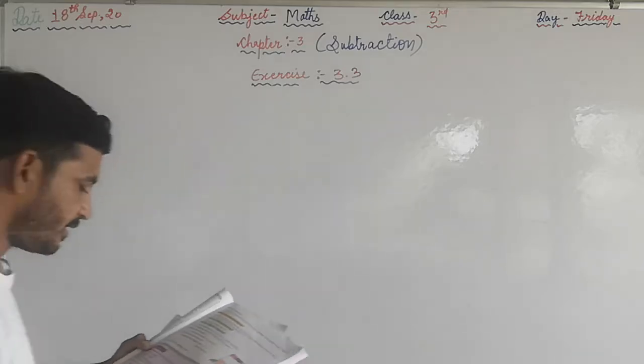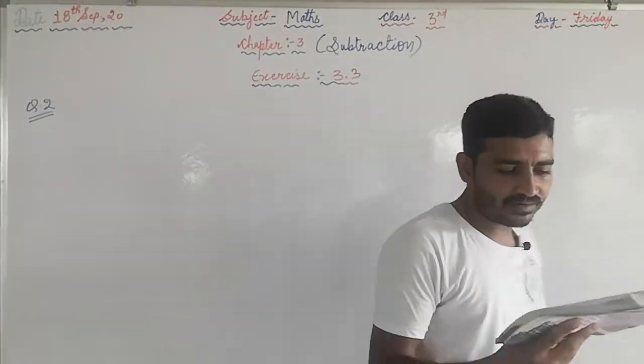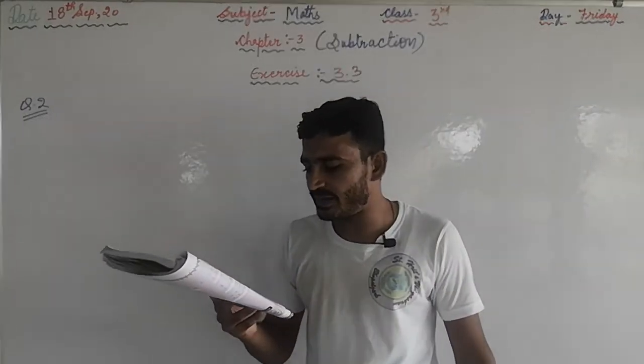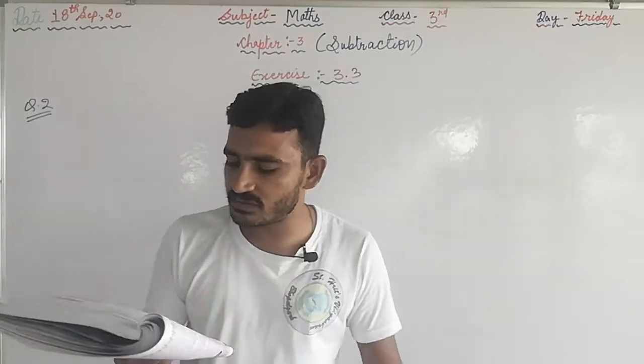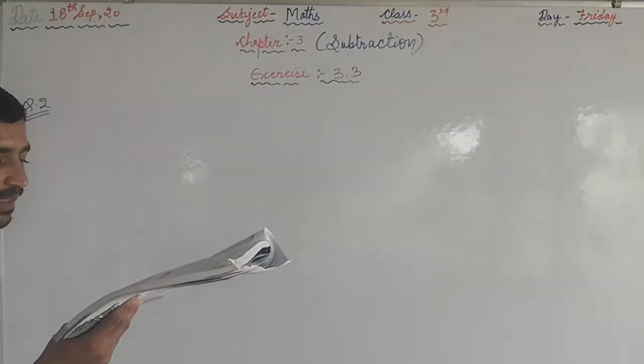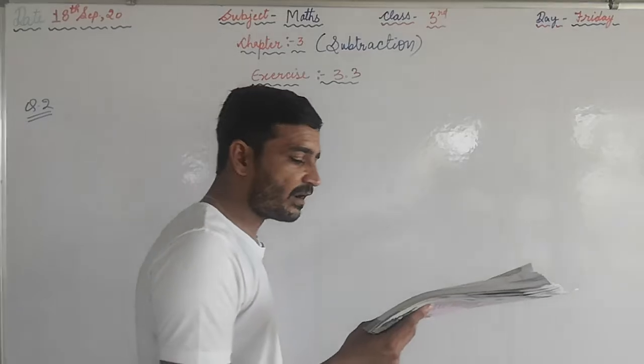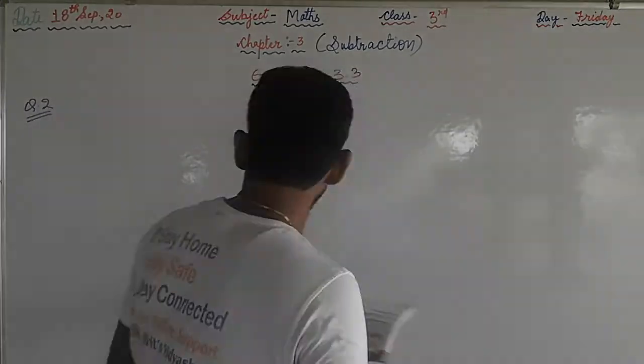First read the question. Rasmi subtracted 3758 from 6015 and obtained 2357 as the answer. Check if our answer is correct or not.